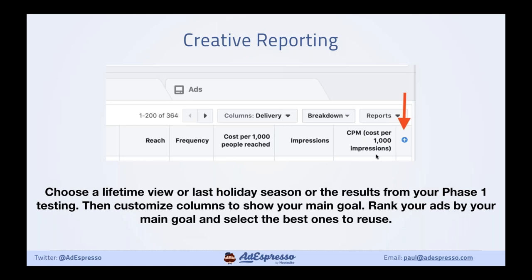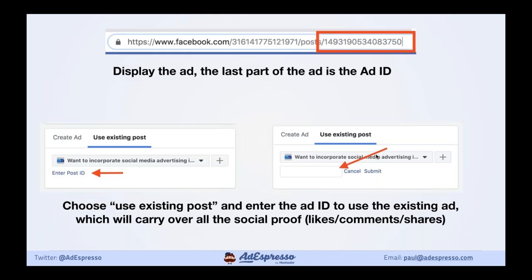You can look at different views — lifetime, so you're getting your all-time best ads, or from last holiday season to see what worked last Black Friday, or the results from your Phase 1 testing. Whatever it is, use Creative Reporting to find your very best ads. Then pull up those ad previews — at the end of the URL you'll get an Ad ID. In Ads Manager when you create an ad, you'll see a button to 'Use Existing Ad' and you can put in that Ad ID to reuse your top performers.